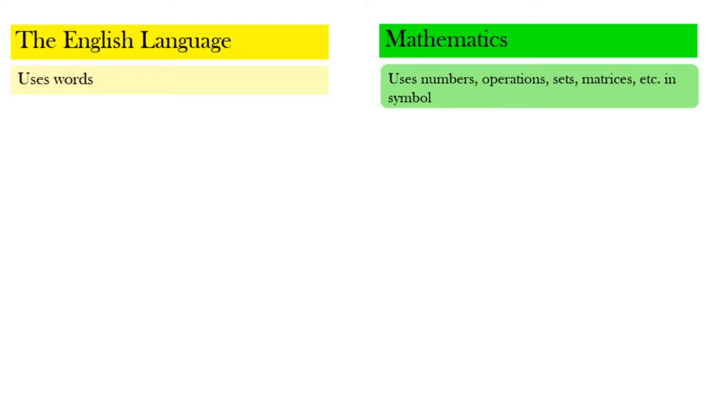In mathematics, though, we use numbers, operations, objects like sets, matrices, and others. We use a different symbol other than using the letters just like what we do when we form our sentences in the English language.